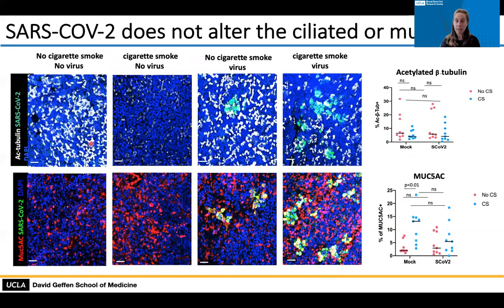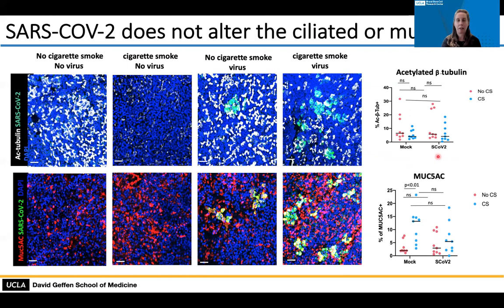We assessed different cell types under these conditions. In the control with no cigarette smoke and no virus, there is a large number of ciliated cells. When exposed to cigarette smoke without virus, we see patches of ciliated cell loss, but no statistically significant difference overall. The same is true with virus alone and no cigarette smoke — really no difference in ciliated cell number. And with cigarette smoke plus virus, there is also no significant difference in ciliated cells, as quantified in the graph on the right.